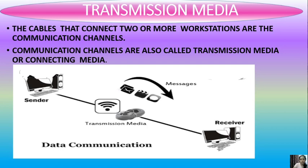Before starting the topic, first we should know what is the meaning of transmission media. Here you can see one image - one sender PC is there and one receiver PC is there. Sender PC is placed in the top left corner and receiver is on another side. From sender to receiver we can send messages via transmission media, and this transmission media can be wired or wireless. Today we are going to discuss about wireless transmission media, specifically satellite.